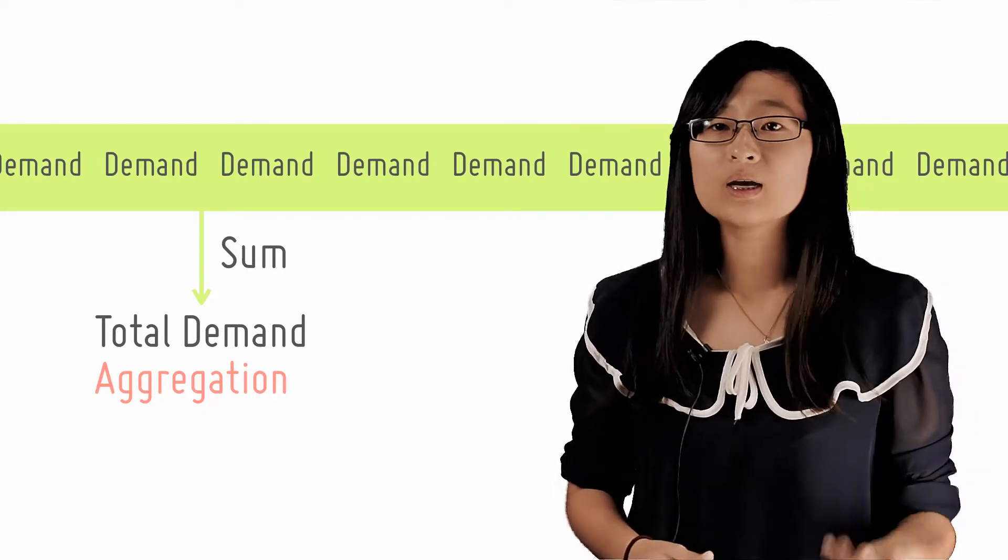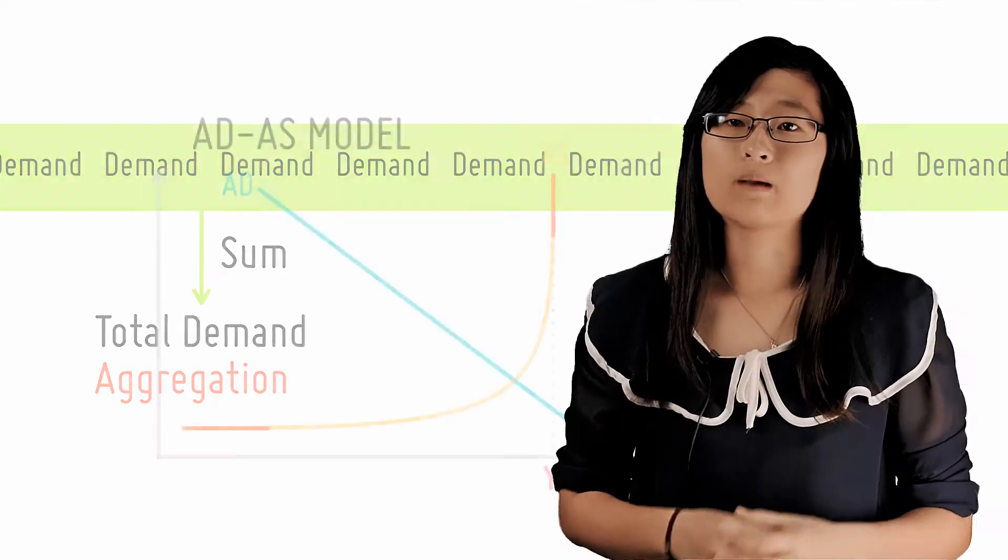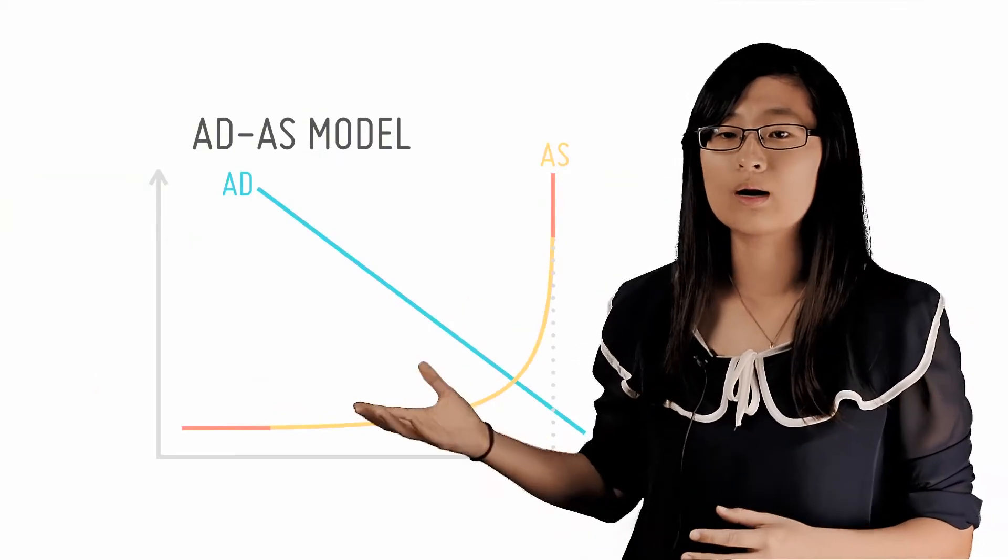So by aggregating individual demand and supply curves, we get the curves for aggregate demand and aggregate supply, which look like this.